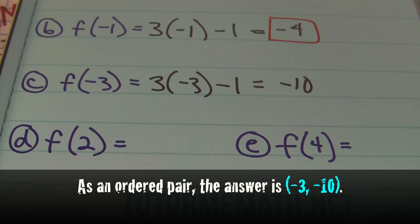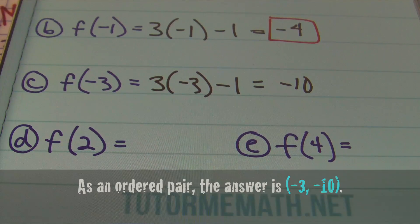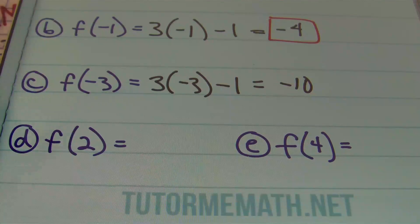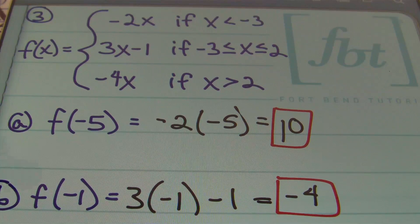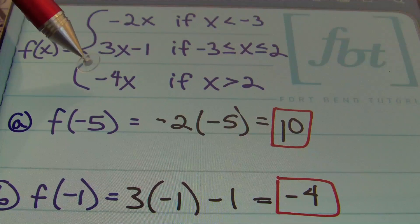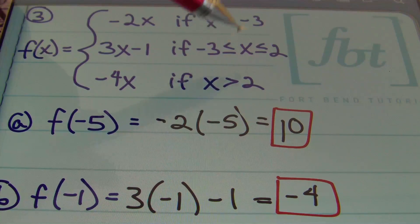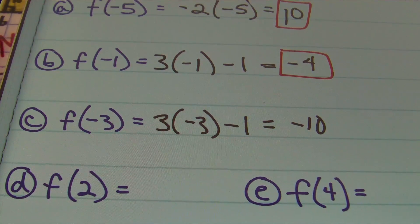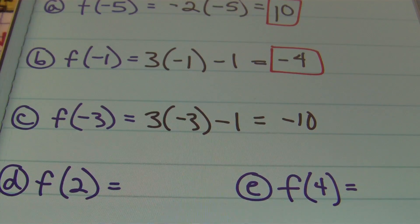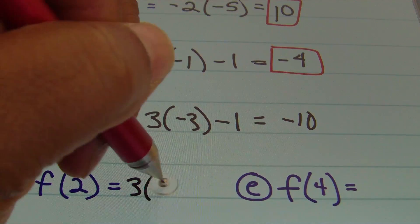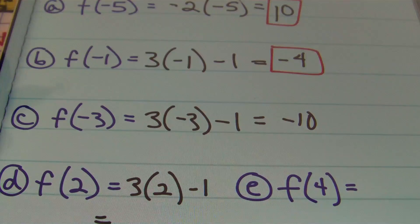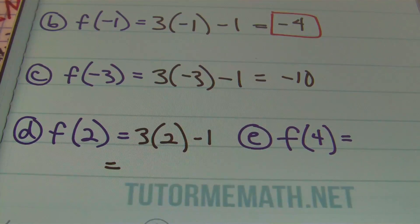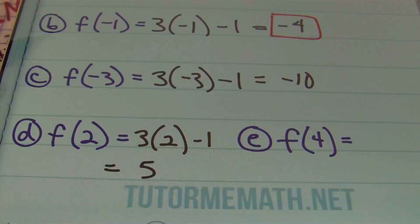For part d, f of two means we want the y value when x equals two. The second part of the function includes x equals two because that interval includes the value of two. Plugging in: three times two minus one. Three times two is six, and six minus one is five.